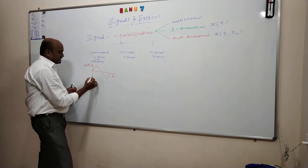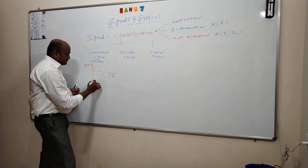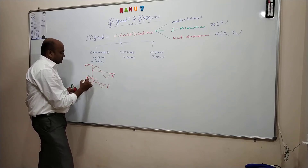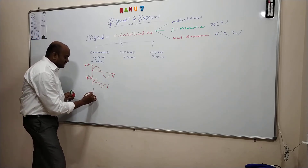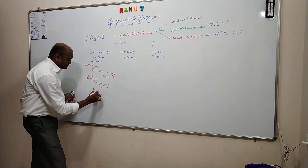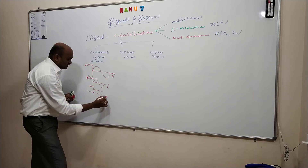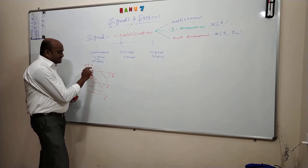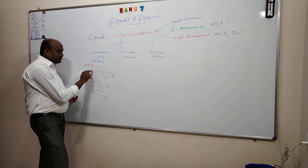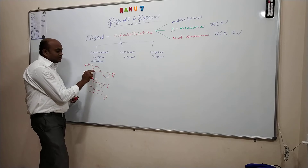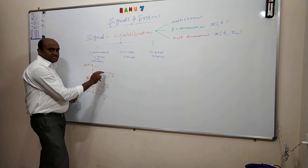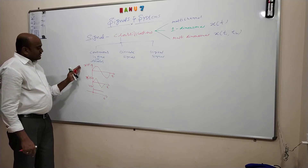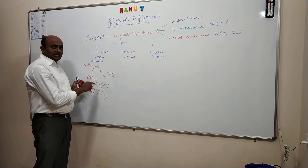Examples of continuous-in-time signals: a ramp signal r of t, a unit step u of t — these are all basic elementary signals that are continuous in time. This signal is defined for every instance of time — at origin, at 0.001, at 0.1, at 0.2, at 1, and so on — for every time instance we have an amplitude value. Such signals are called continuous-in-time signals or analog signals, and a system which processes these signals is called an analog system. Analog communication depends upon this type of signals.